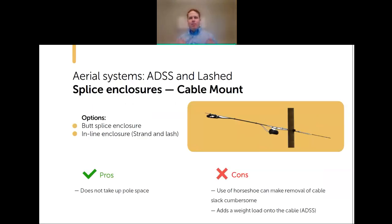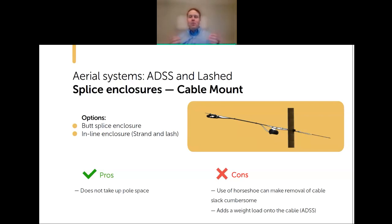The other option is to mount the enclosure on the cable paired with a horseshoe for slack storage. This is more common in strand-and-lash applications. With strand and lash you have a couple of enclosure options: a traditional butt splice enclosure, or an inline enclosure. There are some very good inline splice enclosures on the market that bring great value to a fiber-to-home network.